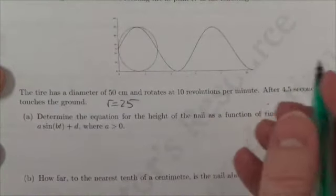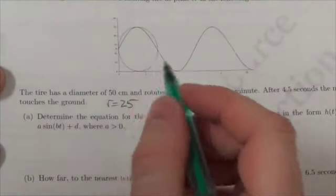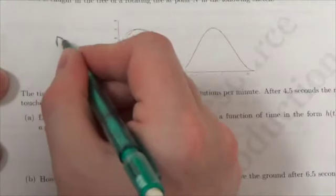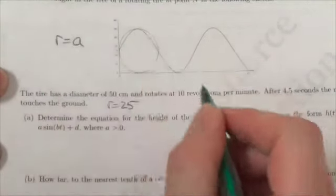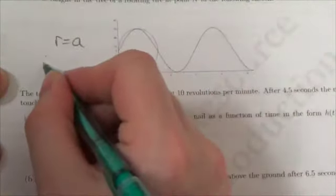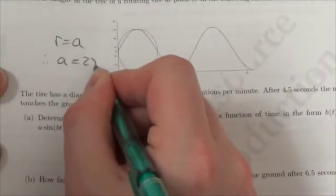Granted, that may be obvious to you, but what might be less obvious here is that the radius of a tire will be equal to the amplitude of the motion. Therefore, my A value immediately is 25.